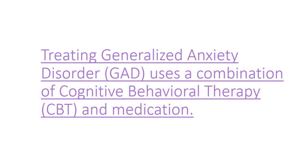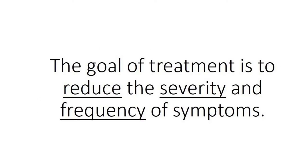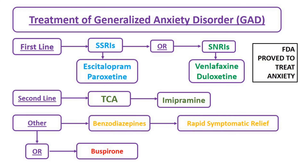Treating generalized anxiety disorder uses a combination of cognitive behavioral therapy and medication. The goal of treatment is to reduce the severity and frequency of symptoms. The first-line treatment is SSRIs and SNRIs.